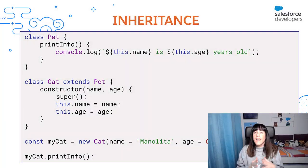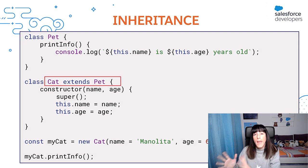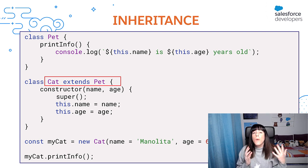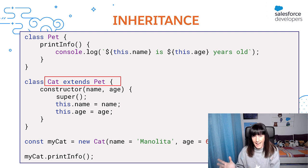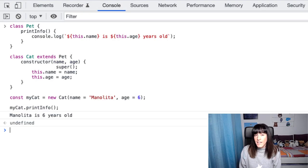First, let's take a look at an example in which we use inheritance. Here we have a cat class that extends pet. That means that cats can use methods declared in the pet class. Let's execute this code. As we can see, we can use the printInfo method from the parent class.